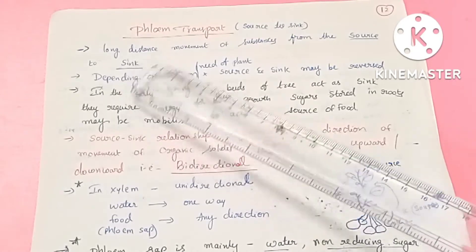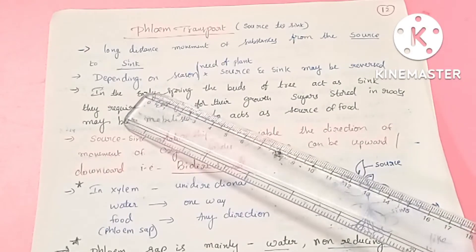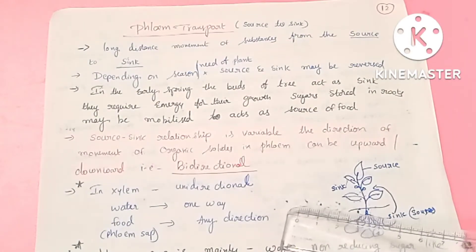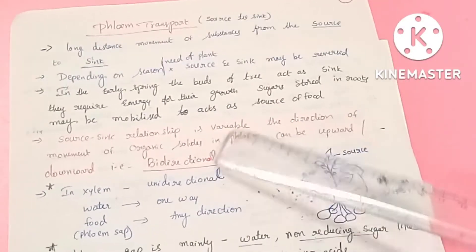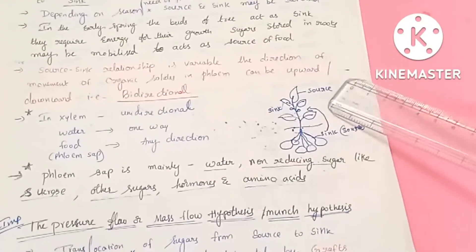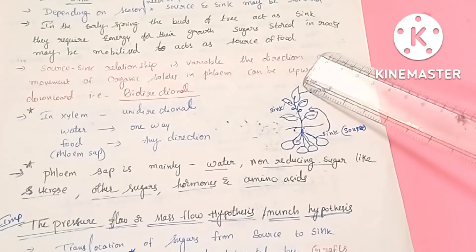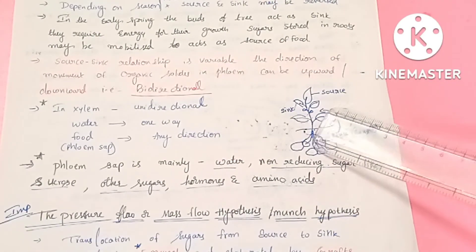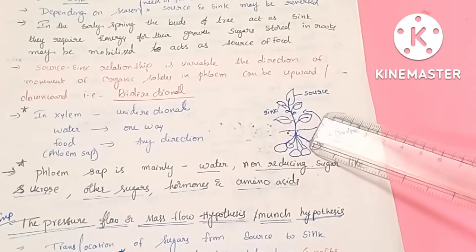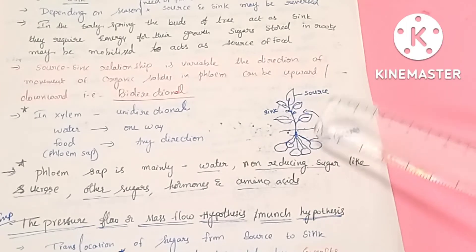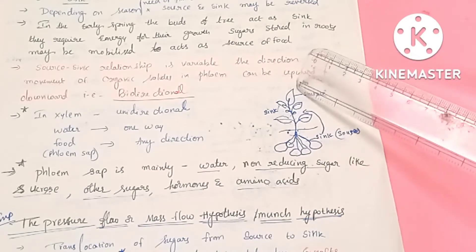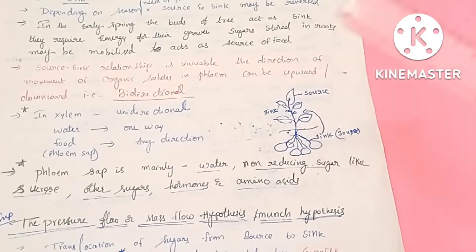Phloem transport is a long distance transport. Depending upon the season and the need of the plant, there is a source and a sink. The source-sink relationship can reverse — for example, in the season when leaves make food, it can be translocated to the roots and storage organs. The roots can also be translated into a source in the early spring season.